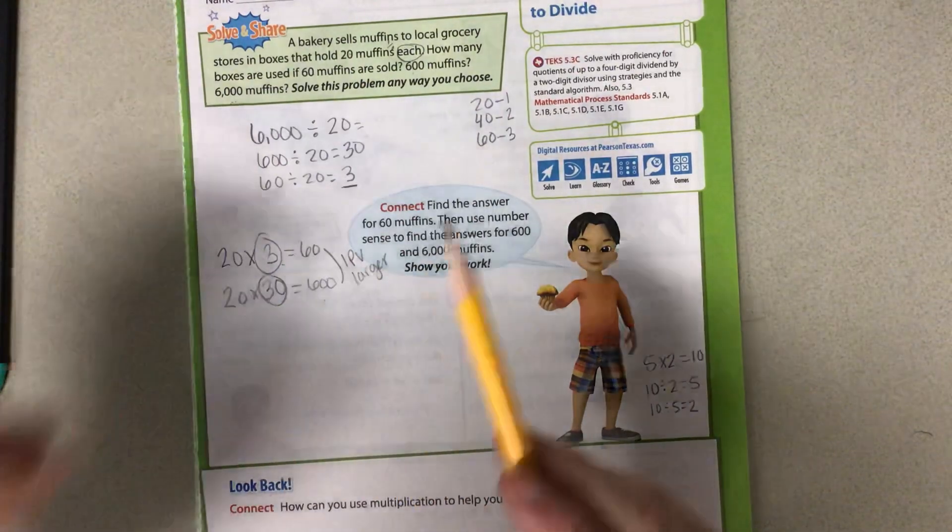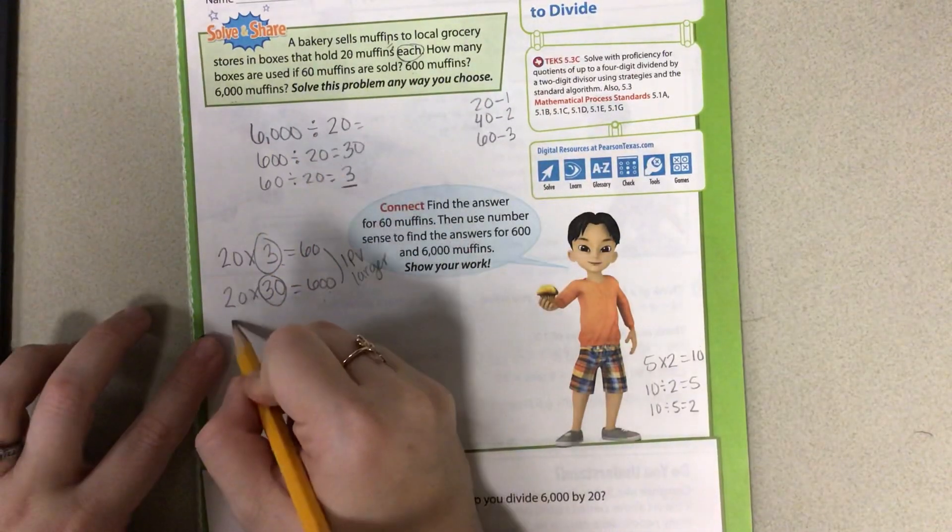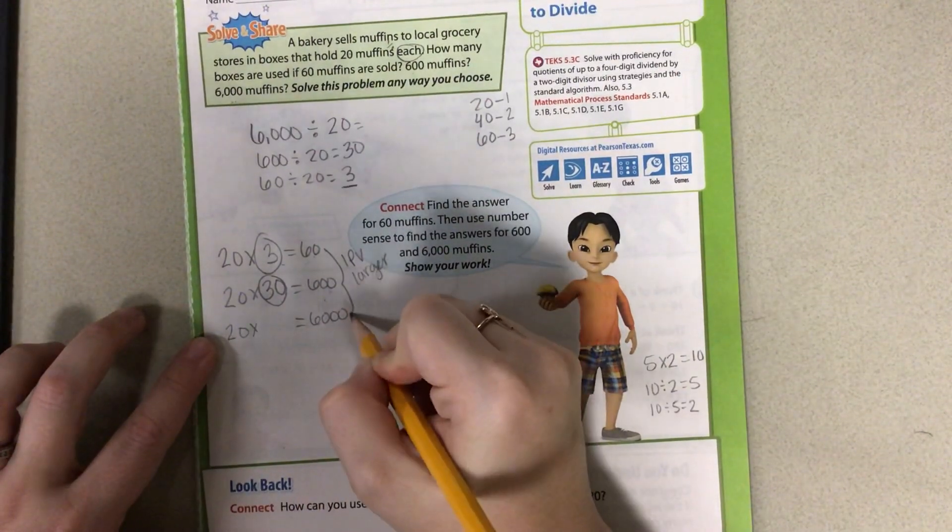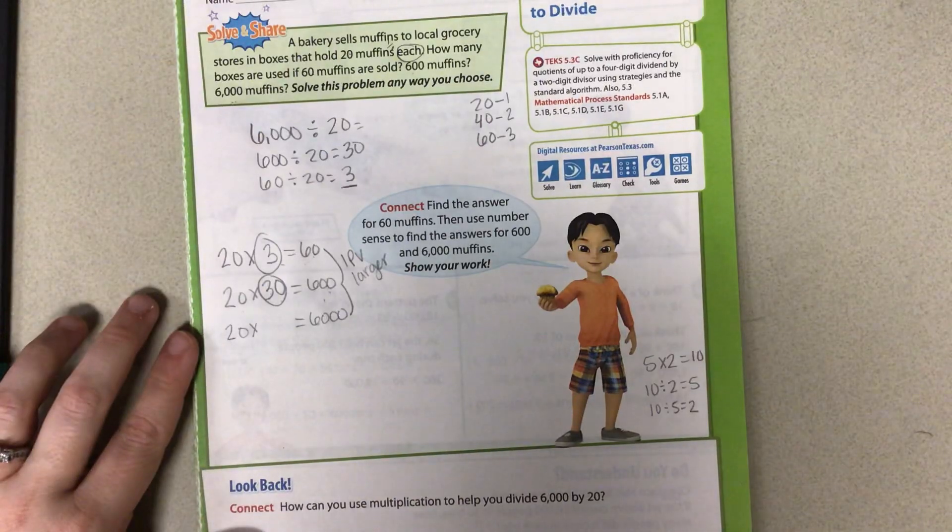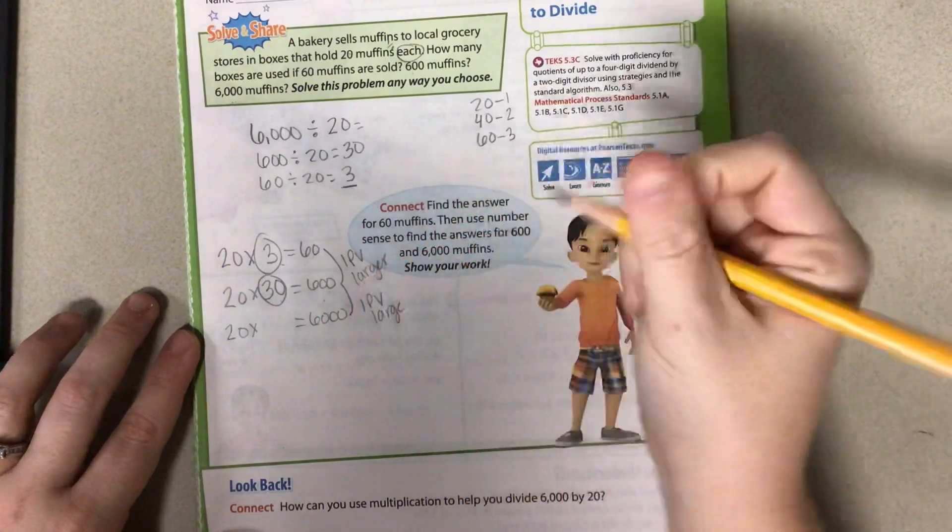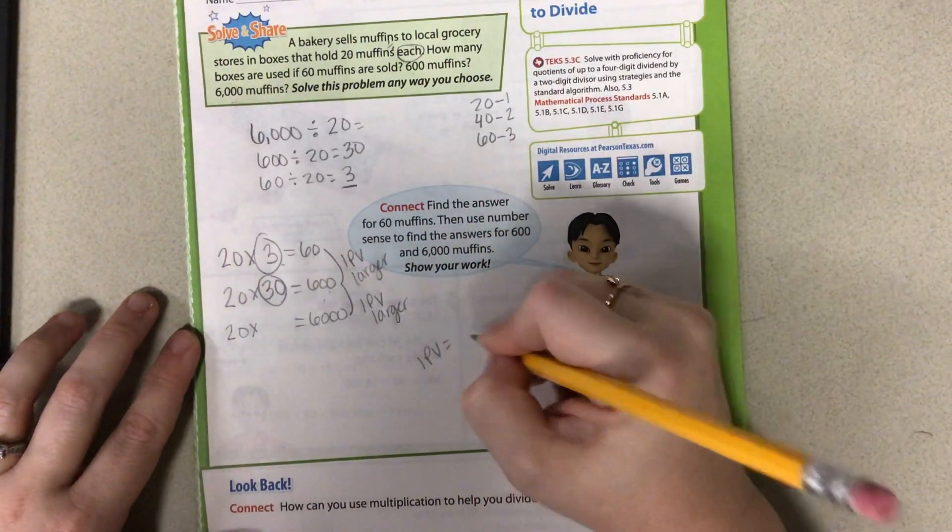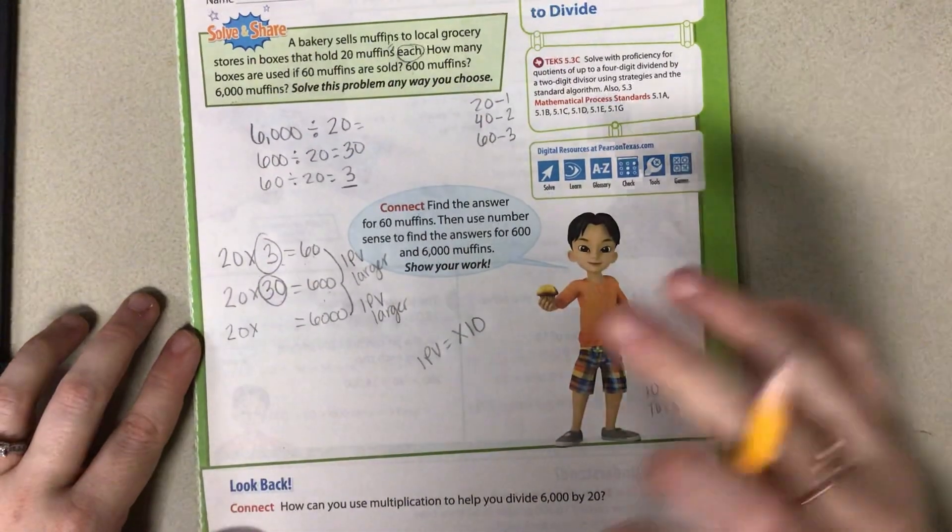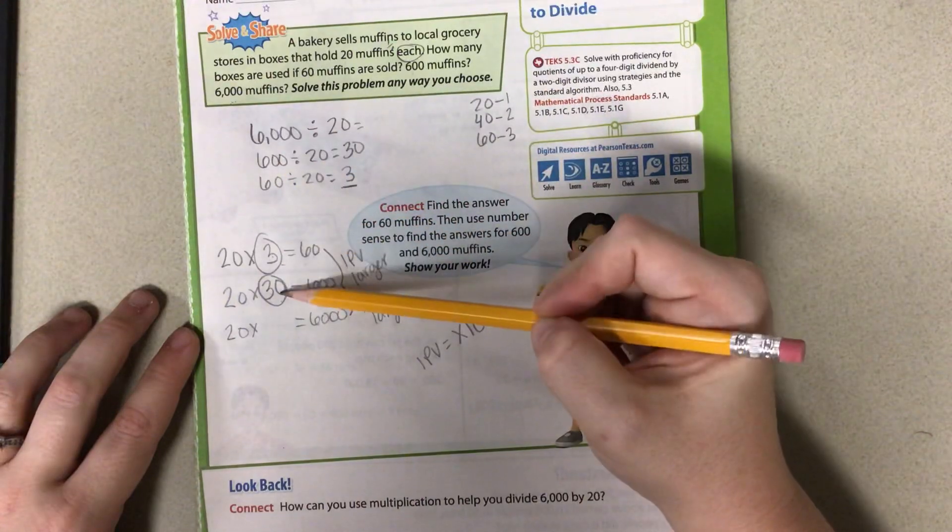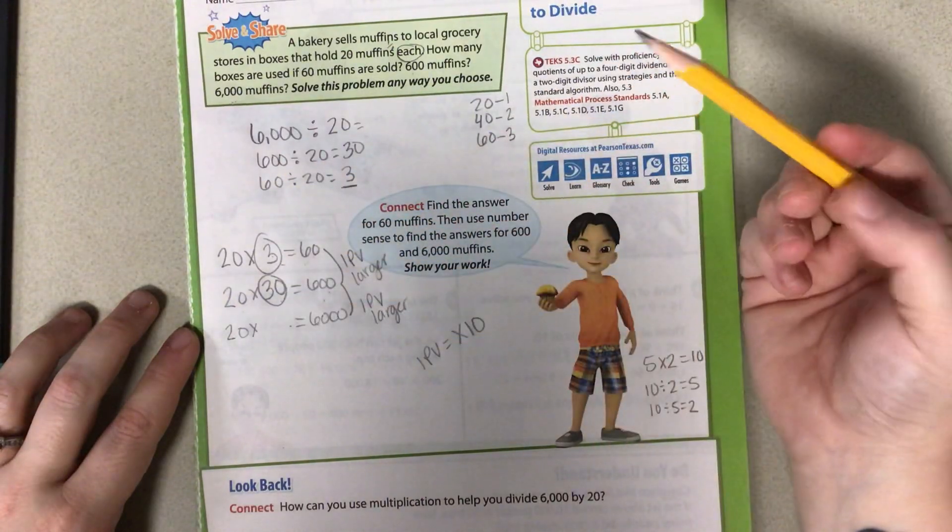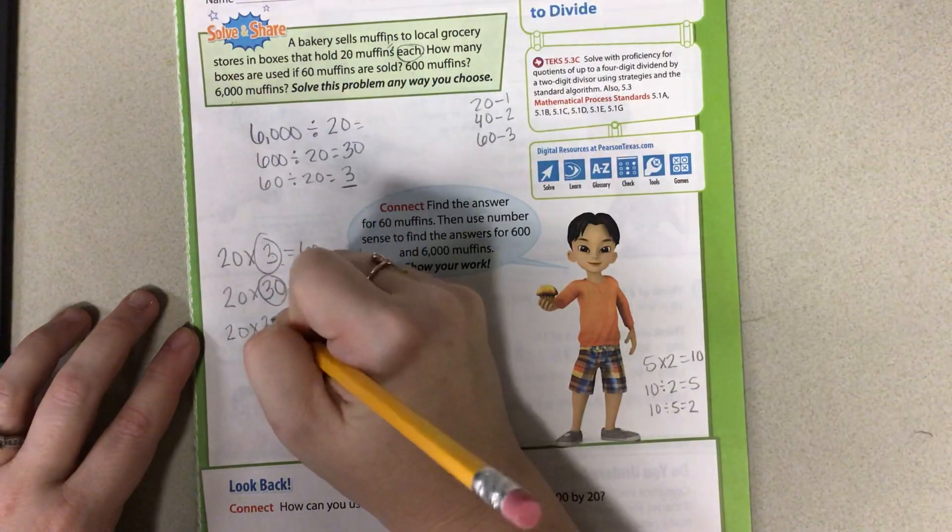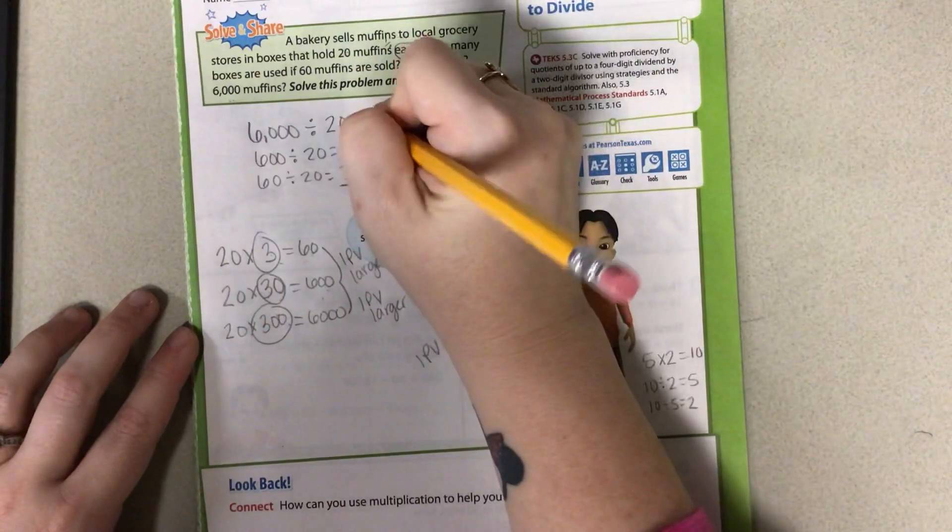Let's try the last one here. We have 20 times something gives me 6,000. Now how many place values did I get larger? One place value larger. And remember, each place value, one place value equals times 10 because we're moving up. We're multiplying by 10 each time. So I multiplied by 10 here, which means I need to multiply by 10 here. So what is 30 times 10? That would be 300. So we know our answer is 300.